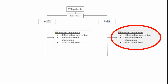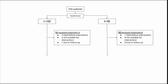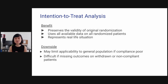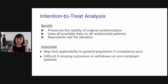On the B side, one died before intervention, four were not suitable, and zero were lost to follow-up. In the intention-to-treat analysis, all 102 originally randomized to group A are included, and all 98 from group B are included. The benefits are that it preserves the validity of the original randomization, uses all available data, and represents a real-life situation. The downside is it may limit applicability if compliance is poor, and it's difficult when there are many missing outcomes from withdrawn or non-compliant patients.